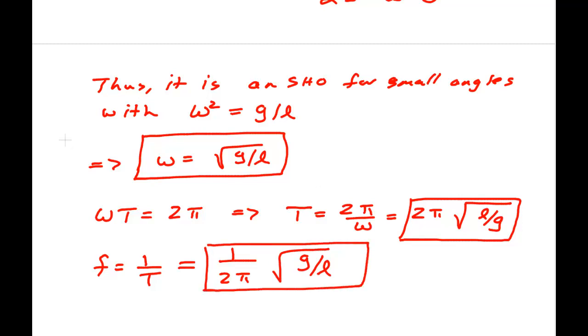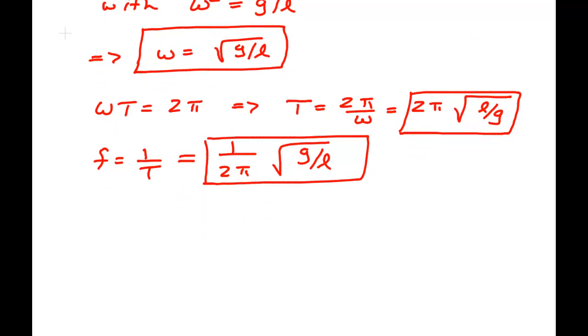What about how to write the angle? Theta is equal to theta max times the cosine of omega T plus phi. There's my amplitude.